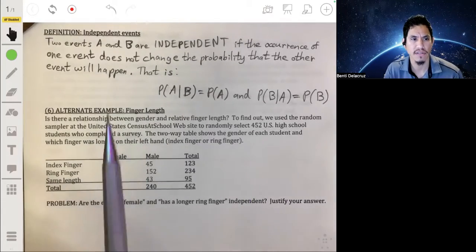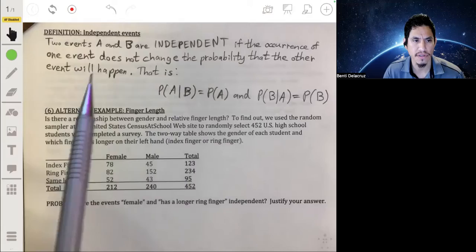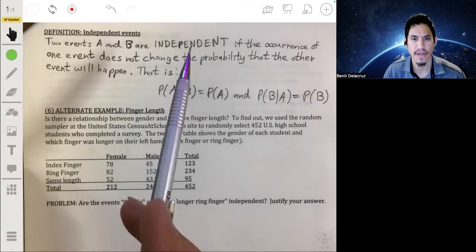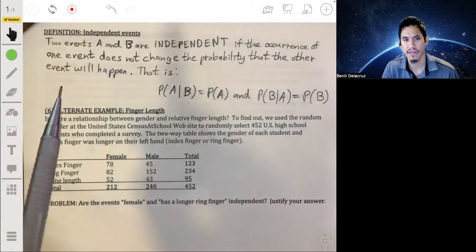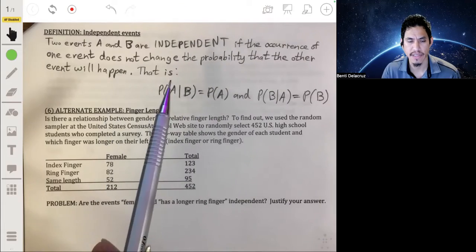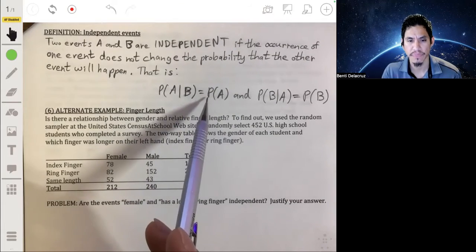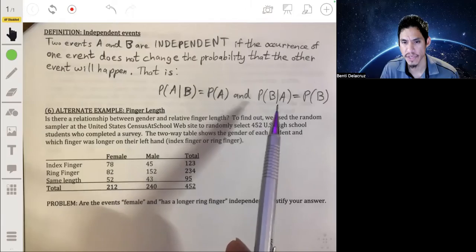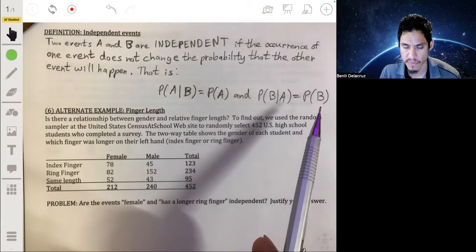Okay, so we're going to go over independent events in this video. So we say that two events, A and B, are independent if the occurrence of one event does not change the probability that the other event will happen. That is, the probability of A given B is equal to the probability of A, and the probability of B given A is equal to the probability of B.